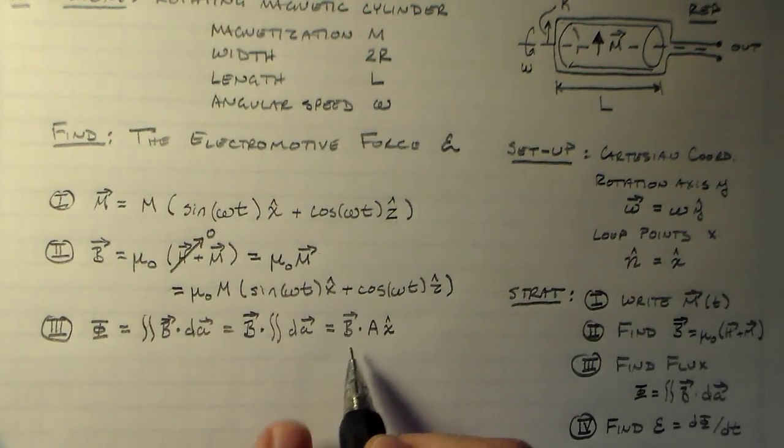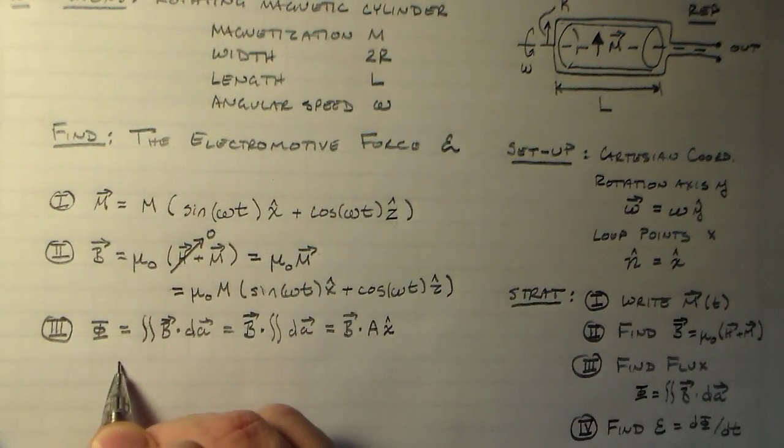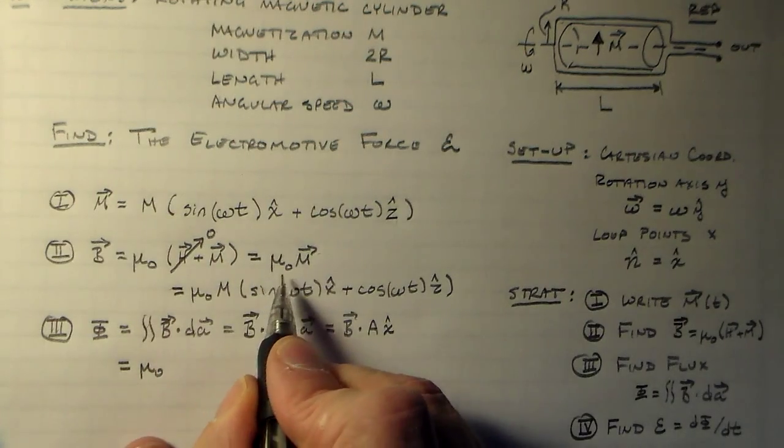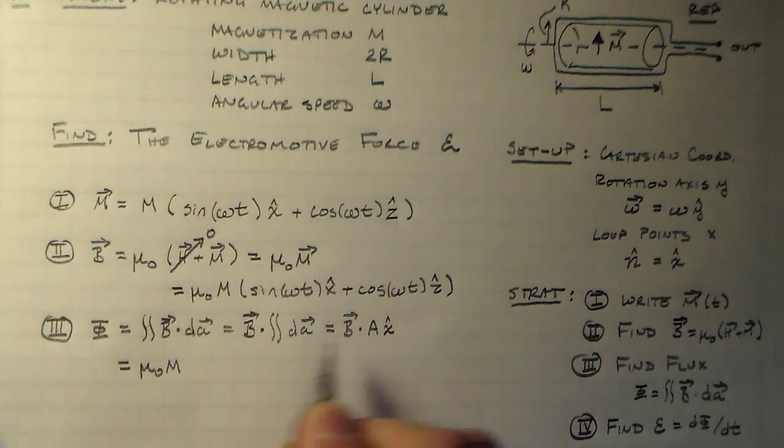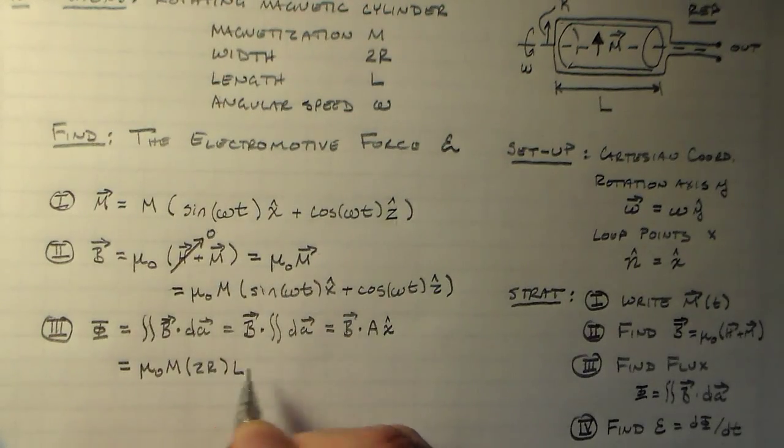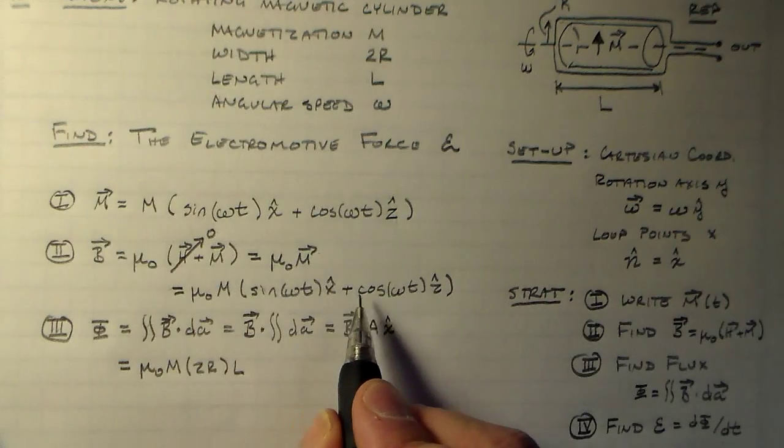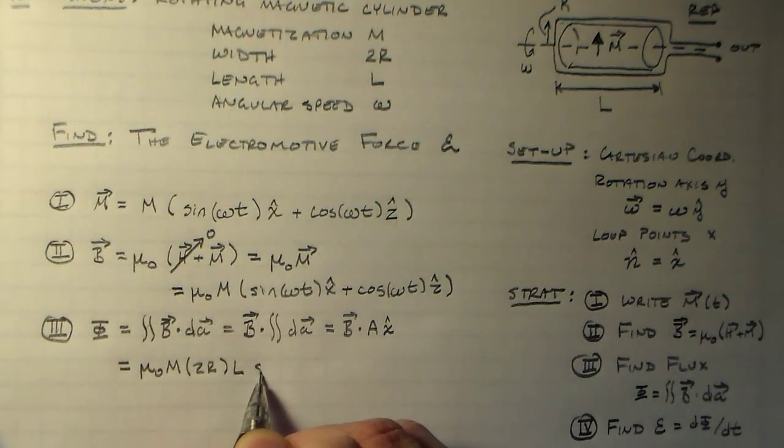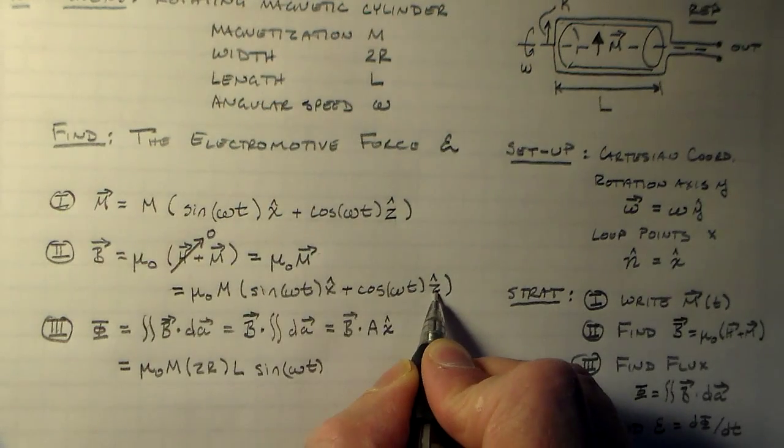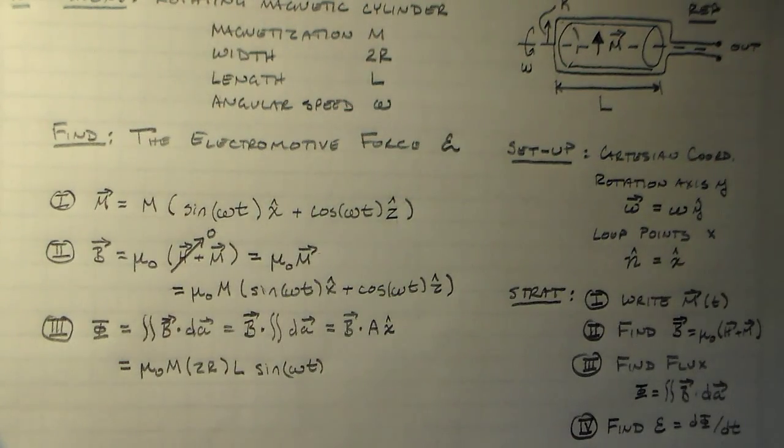And now the area is just going to be 2r times l, and b is just this thing here. So we can just follow up and say we've got mu-naught times m times 2r times l, and then we have the dot product of x-hat with sine omega t x-hat and cosine omega t z-hat. So we have sine omega t because x-hat and z-hat are mutually perpendicular, and these are both in the same direction, and they're unit vectors, so everything's hunky-dory.